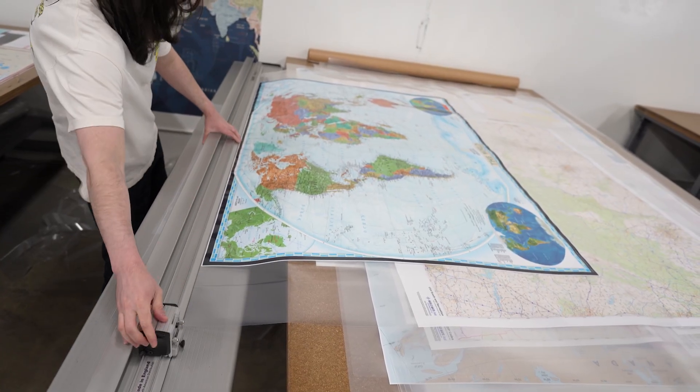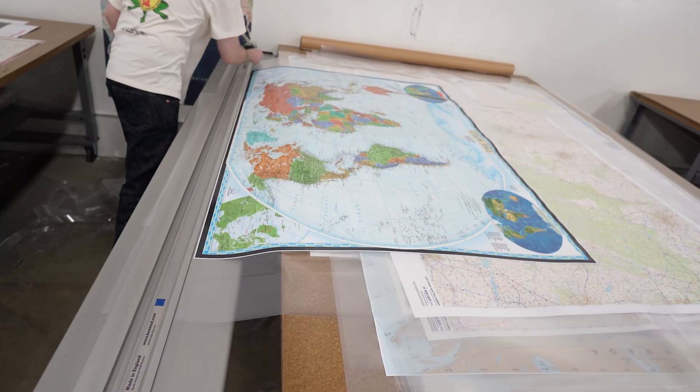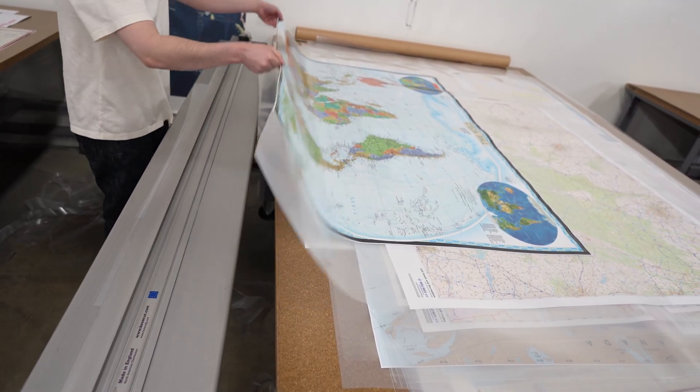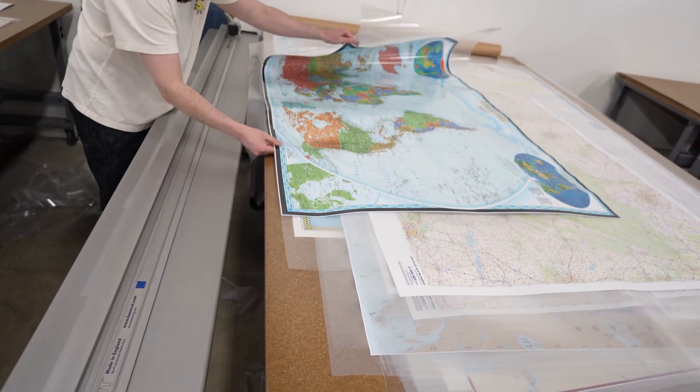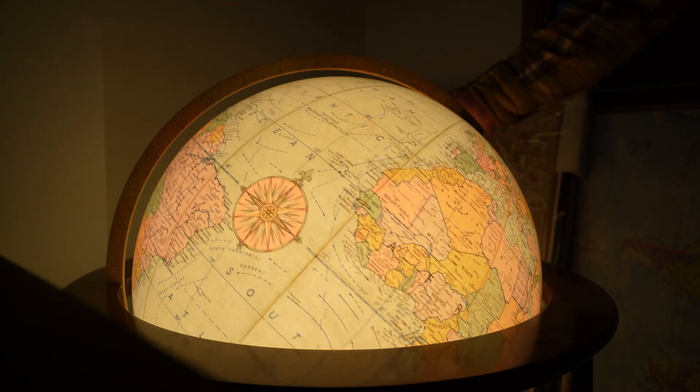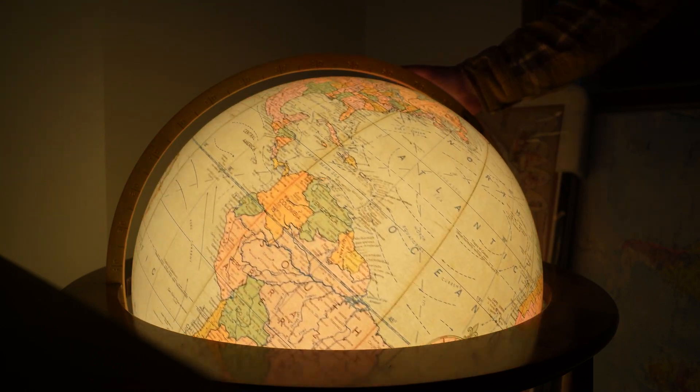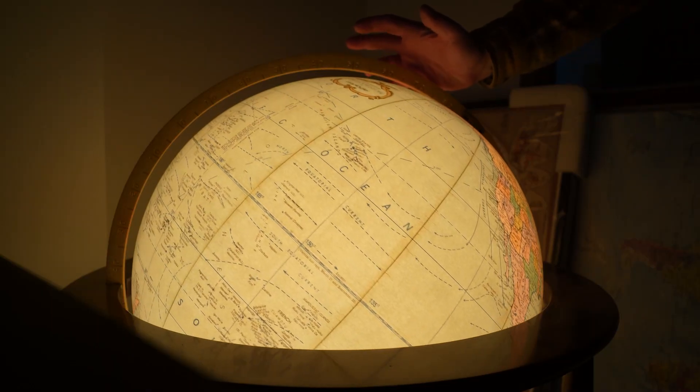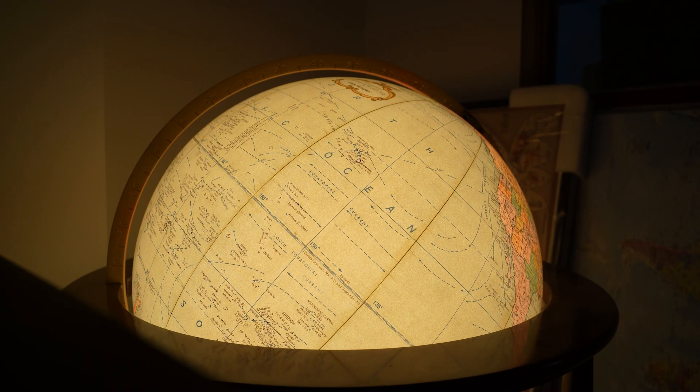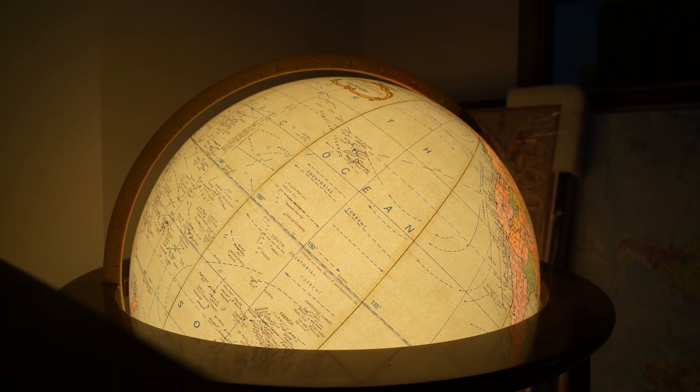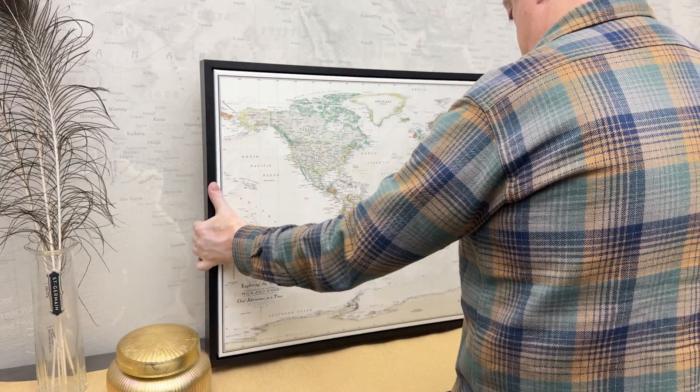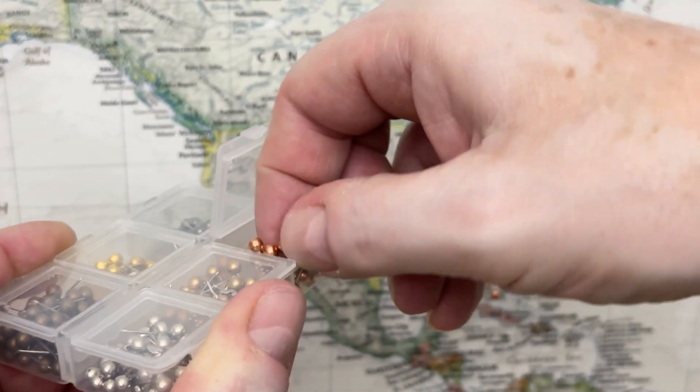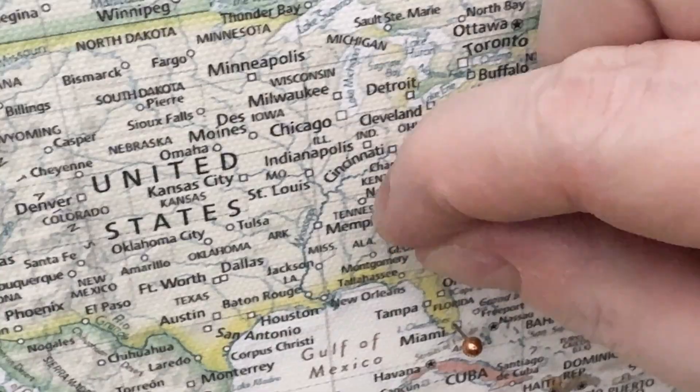So which one should you actually have on your wall? Here's what I think. If you're going to have a world map in your home, and obviously I think you should, it should at least show you what the world actually looks like. I sell maps for a living, so I've spent a lot of time thinking about this. And my recommendation? Get an equal area projection or a Robinson projection. Something that prioritizes accuracy over historical convention.